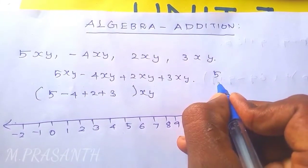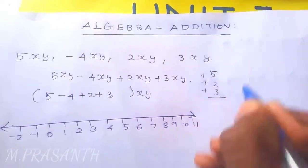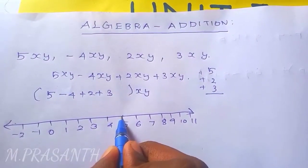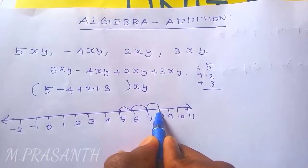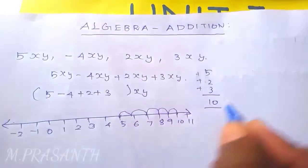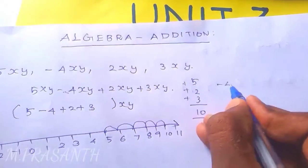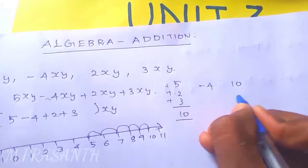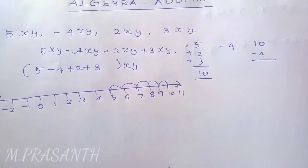The signs are the same, so as I explained in the last video about the number line, here 5 is here, so 5 plus 2 equals 7, 7 plus 3 equals 10, so the answer is 10. Another number is minus 4, so finally we add 10 minus 4 in the number line.